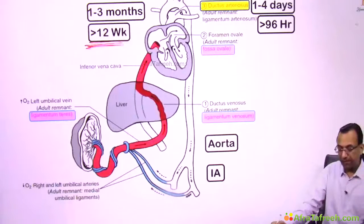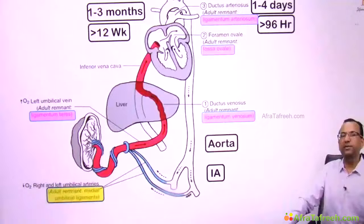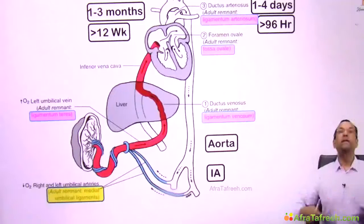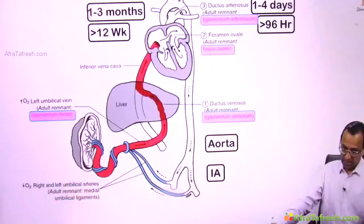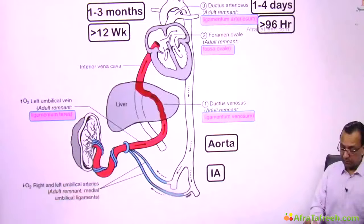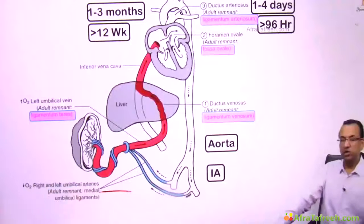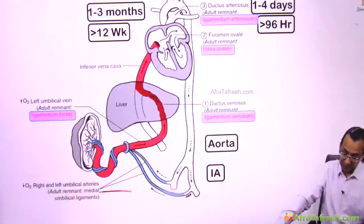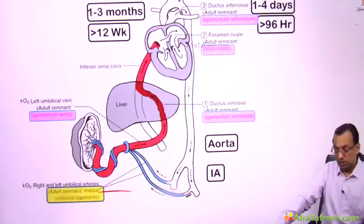The adult remnant of the umbilical arteries forms ligaments running towards the umbilicus. These are called the medial umbilical ligaments — carrying the obliterated umbilical arteries toward the umbilicus.